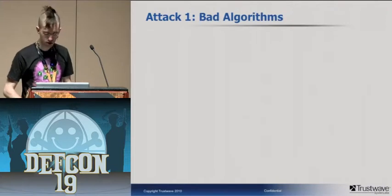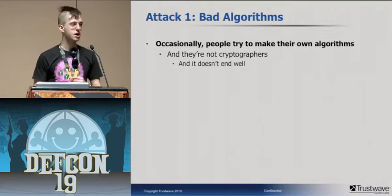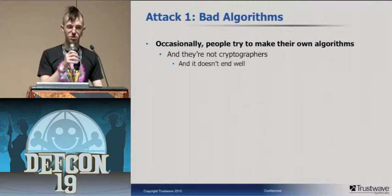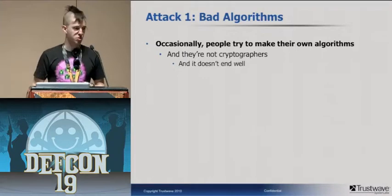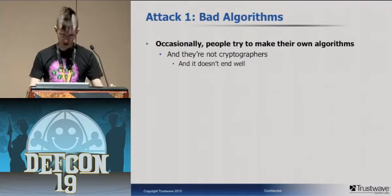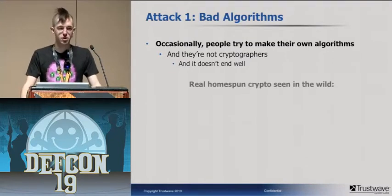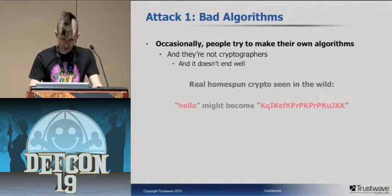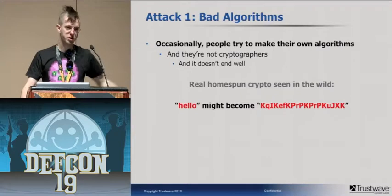Let's talk about using oracles to attack bad algorithms. Occasionally people try to write their own crypto and it doesn't work out well. Let me show you some real homespun crypto I've seen in the wild during a pen test. Here's a plaintext — 'hello' — and its corresponding ciphertext, which looks like gibberish.